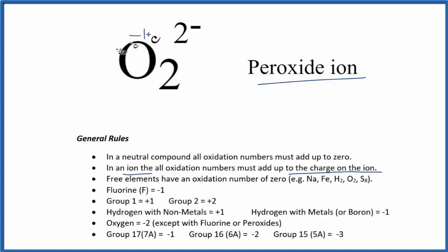...that would give us 2-, and that minus 1 is the oxidation number on the oxygen in O₂²⁻. Note that for charge, we put the negative sign after the number. For oxidation numbers, it comes first—just the way we do it.